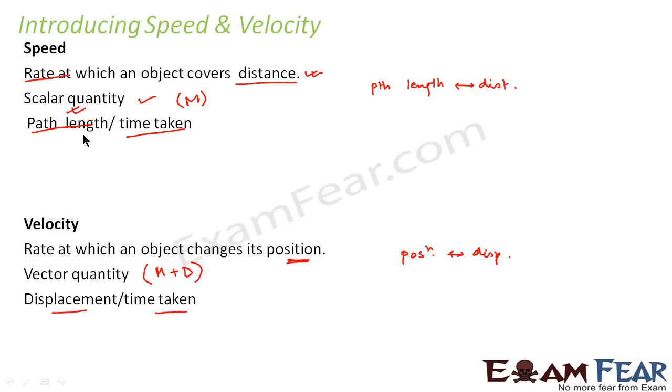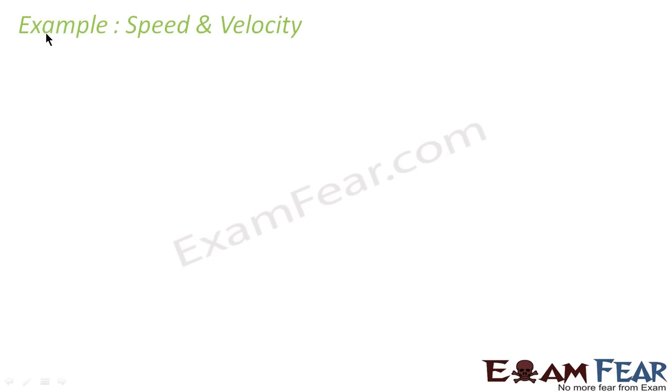So now you can clearly understand that speed and velocity are not the same things. We have very clearly understood that path length and displacement are two different things. They are altogether different things. So speed is the rate of change of path length and velocity is the rate of change of displacement. Now let us take an example of speed and velocity.